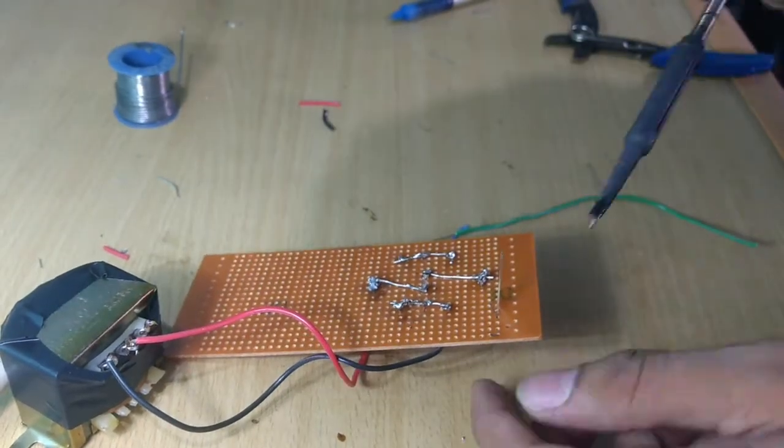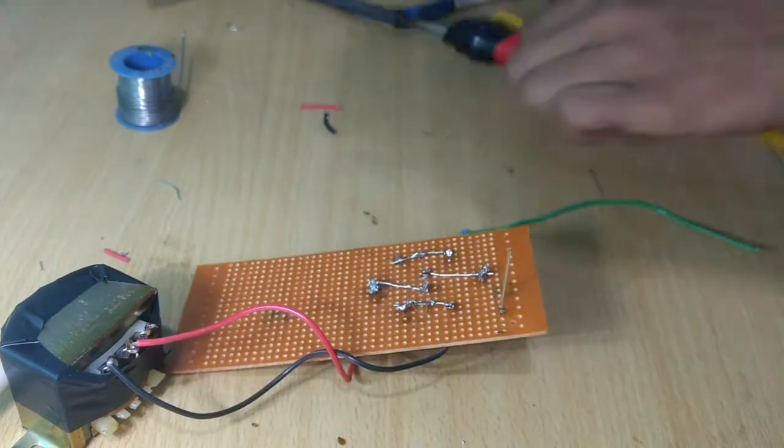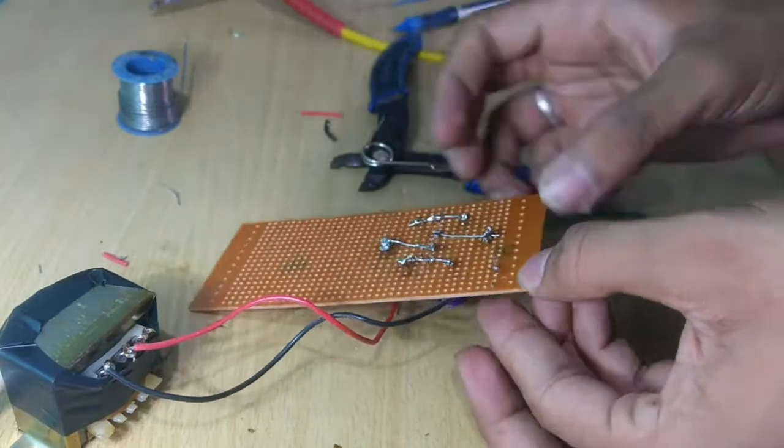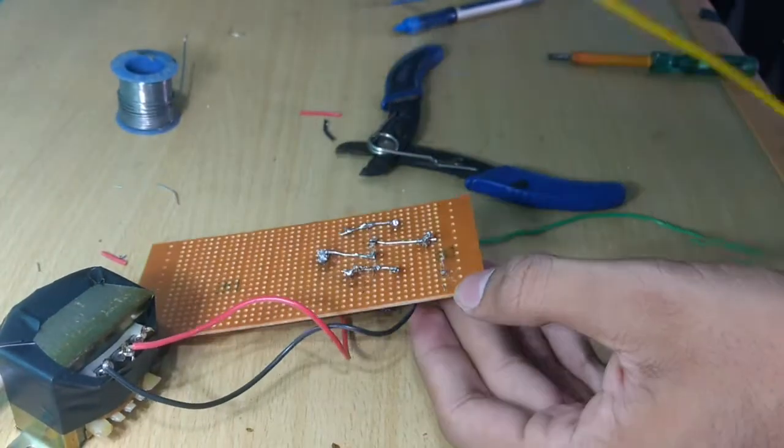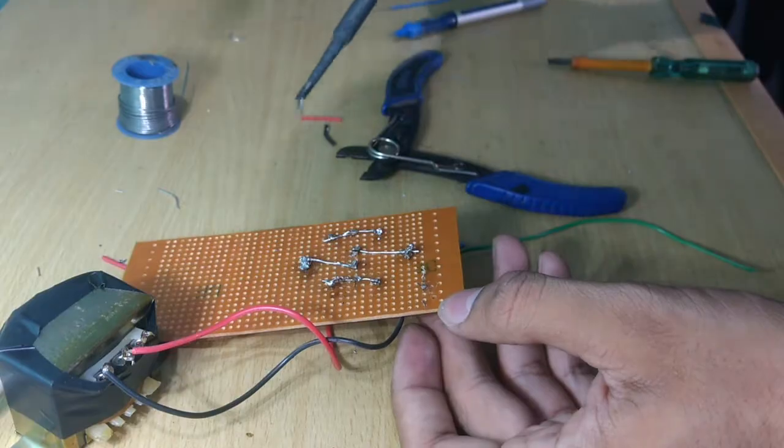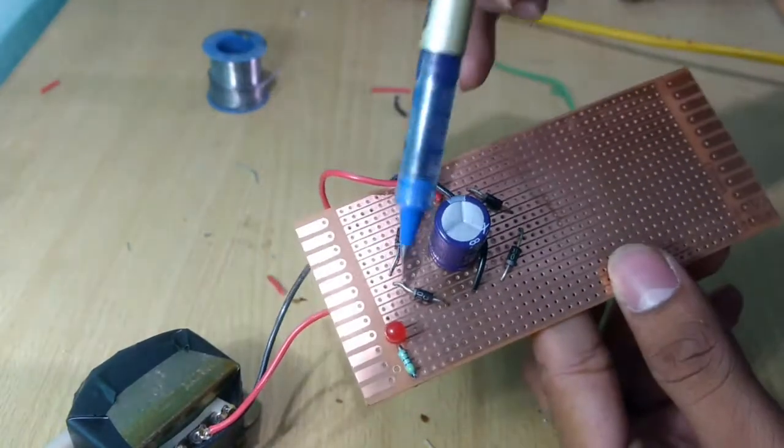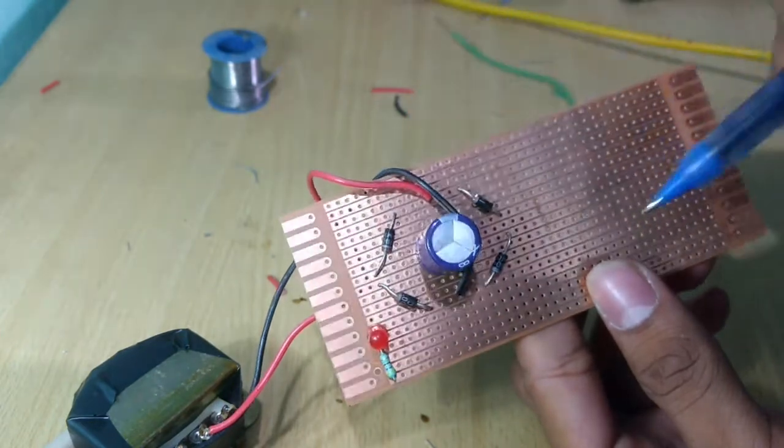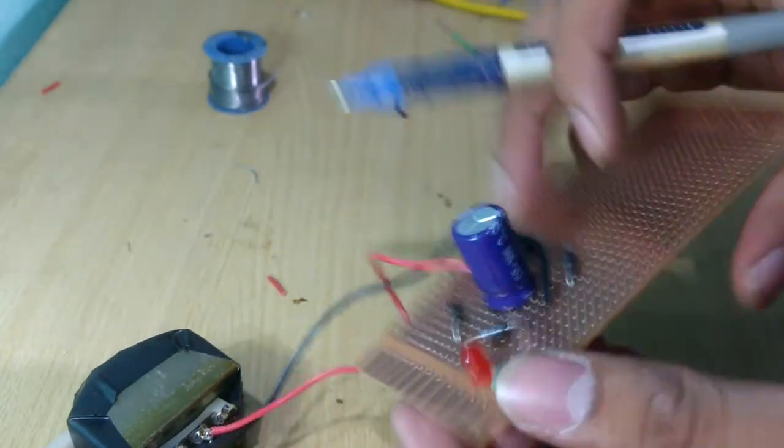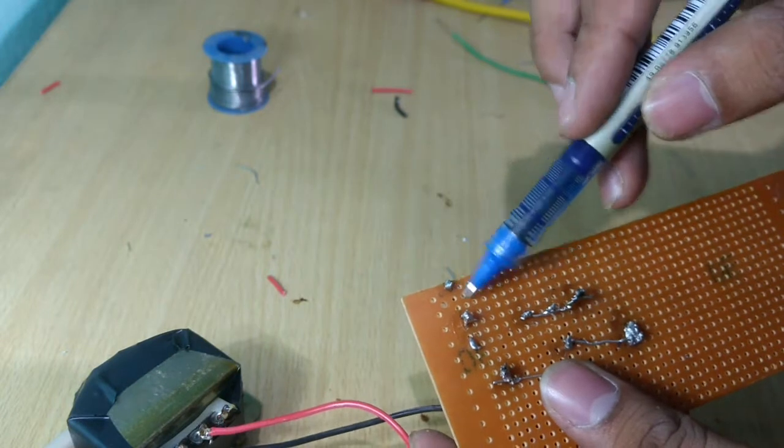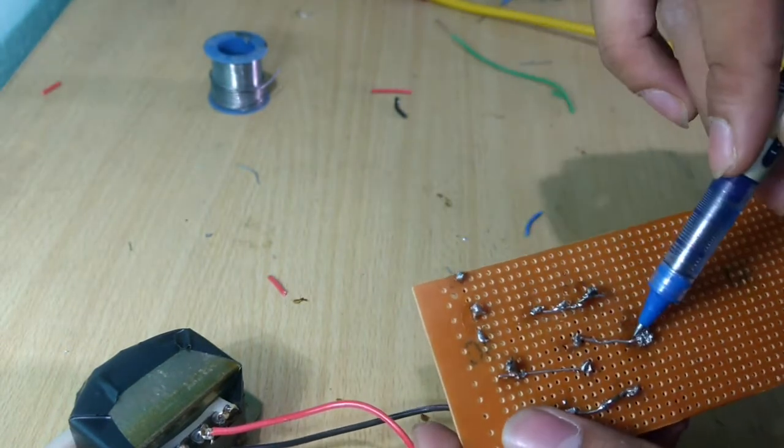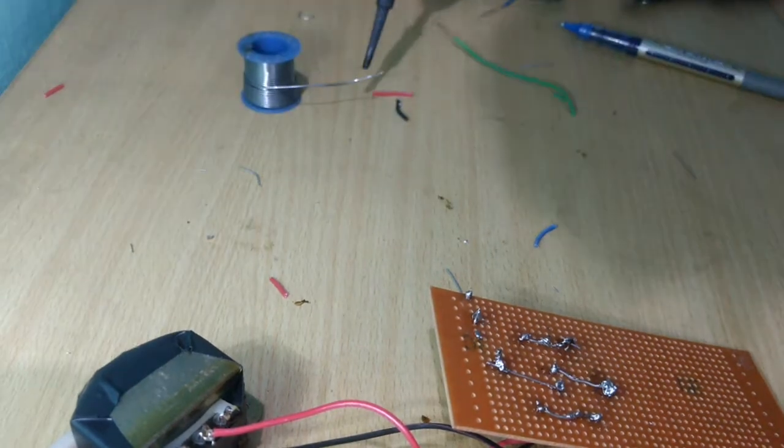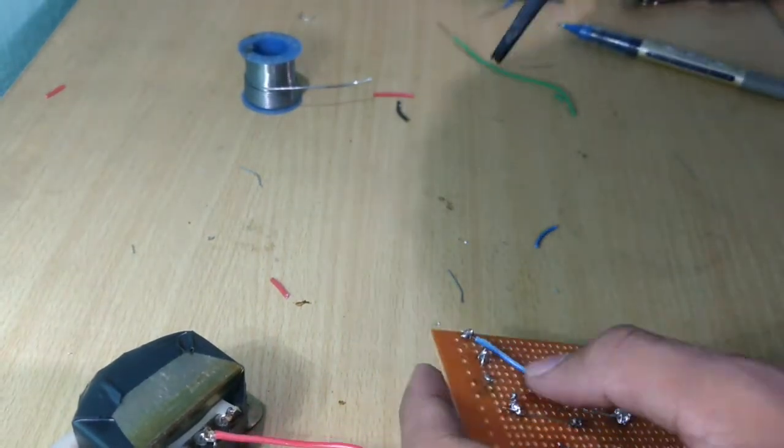Solder the positive terminal of the LED with the resistor. And now the place where the cathodes of the diodes meet is the positive source for the DC output and the place where the anodes meet is the negative source of the DC output. Connect the leg of the resistor to the positive source and the negative leg of the LED to the negative source by using small pieces of wires.